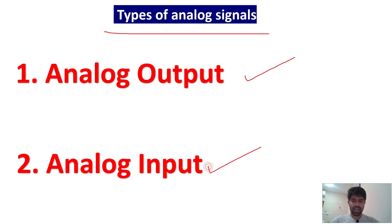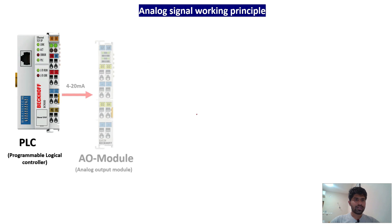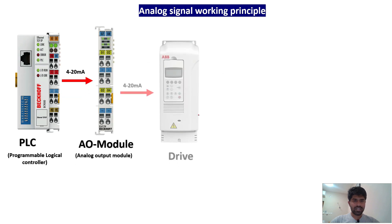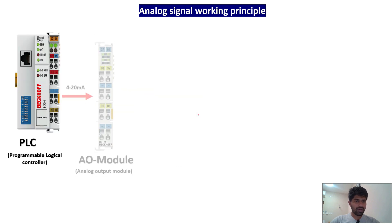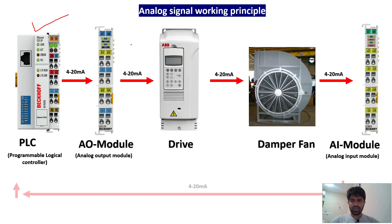The types of analog signals: one is analog output and another one is analog input. We will see what is analog output and what is analog input. This is the PLC in our industry — we will see how it works with a full diagram.